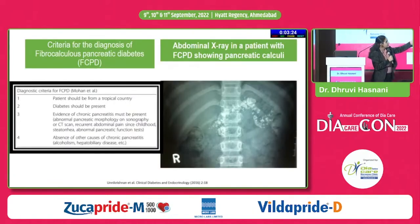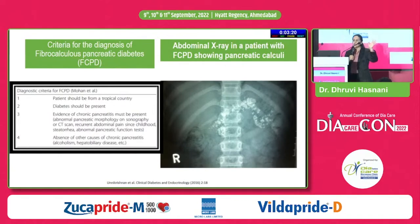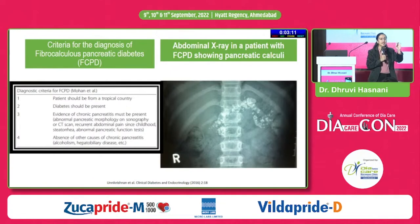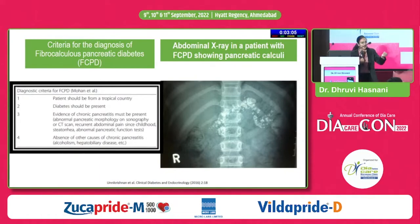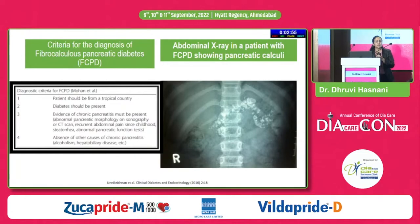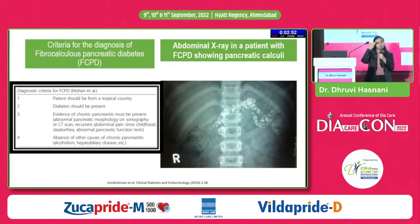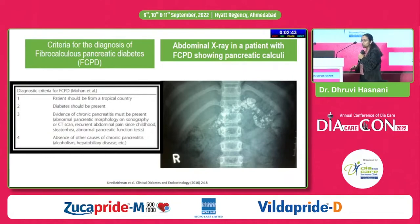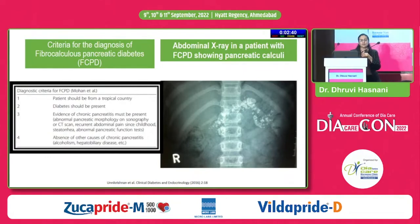FCPD — here is an X-ray showing fibrocalculous pancreatic diabetes. We are a tropical country, so we should not forget to differentially diagnose. For any younger patient coming with complaints, try to get an abdominal X-ray done — it will give you some idea of FCPD. Look for the absence of other risk factors for chronic pancreatitis, such as absence of alcoholism or hepatobiliary diseases. That should make you consider FCPD.